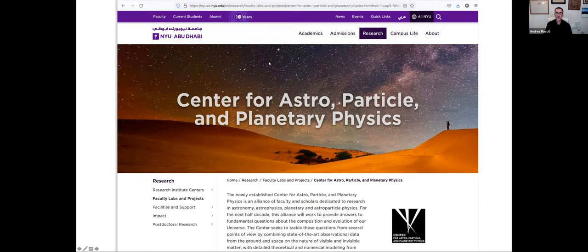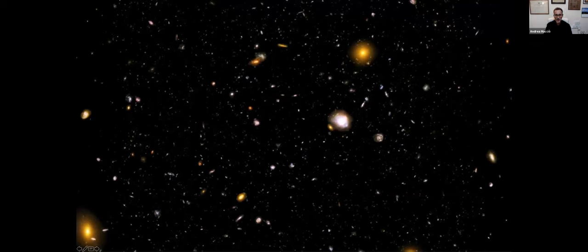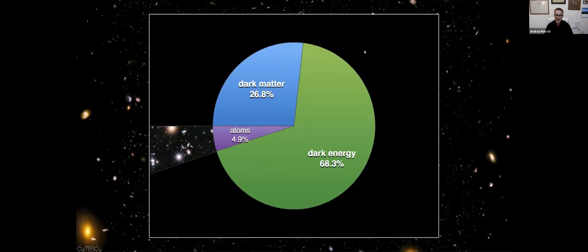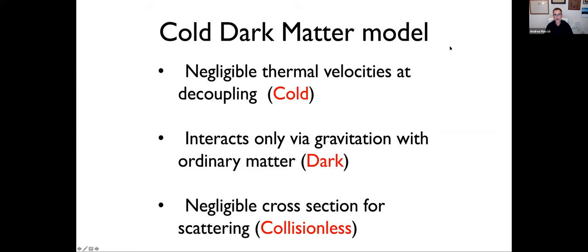The title of my talk is 'Do we need to go beyond cold dark matter?' Over the past twenty-plus years we've built a very successful description of our universe. We know that roughly four-fifths — about 80 percent — of the matter content is in dark matter, and the leading model for dark matter is called cold dark matter.